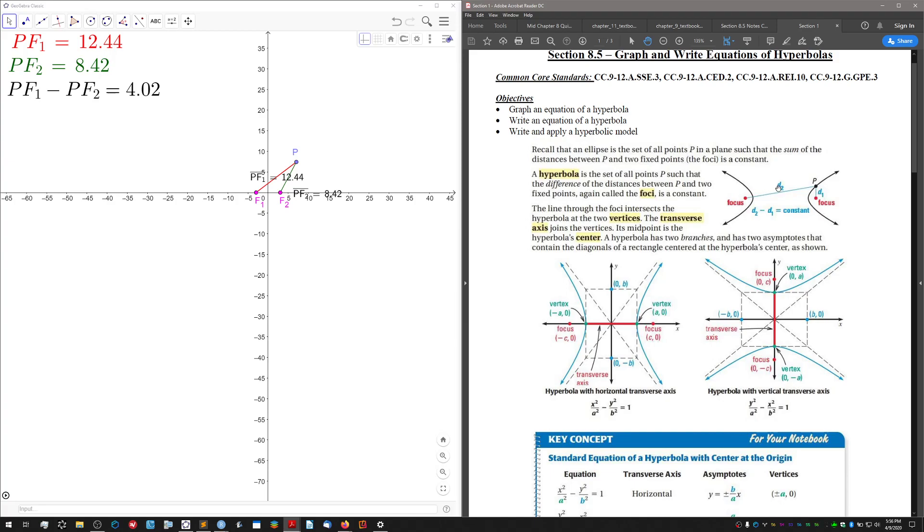In our animation, the constant is four. So if a point is to be on the hyperbola based on our definition, the point must satisfy that this distance from here to here minus this distance from here to here—the point to one focus minus the distance from this point to the other focus—must be 4.02.